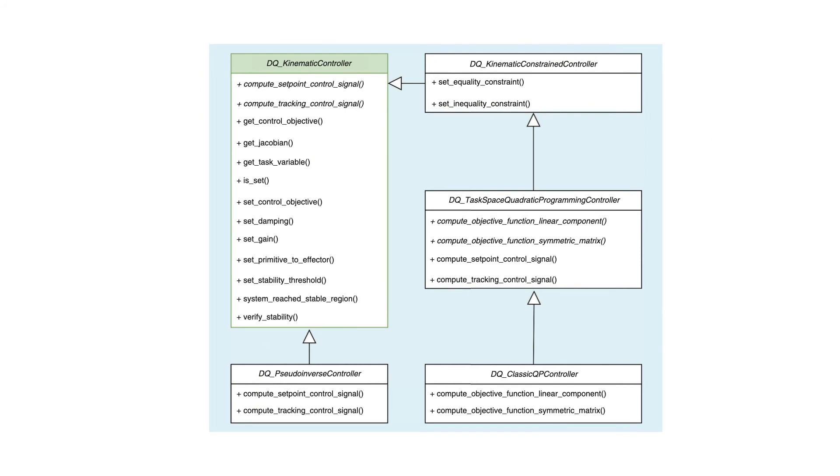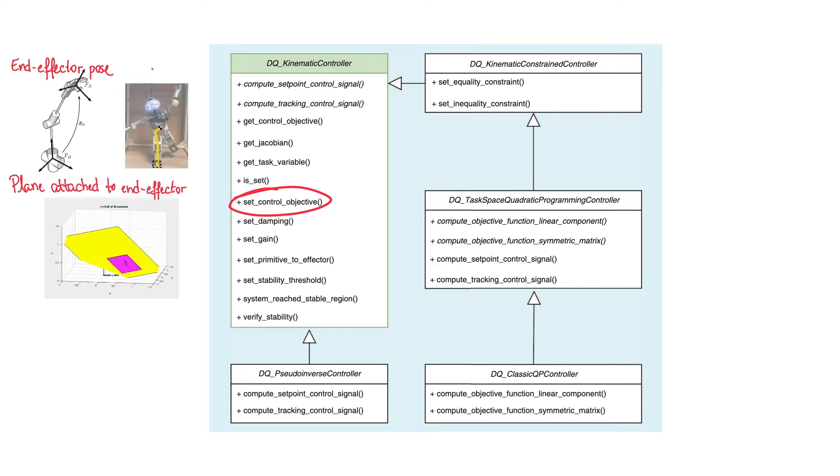The library offers different control laws that make it easier to develop clean code. Also, it is simple to implement sophisticated control laws, such as constrained controllers with different control objectives. For instance, the objective may be to control the end-effector pose or a plane attached to it. It can also be to control the center of mass of a humanoid robot. In all cases, the controller structure is the same.